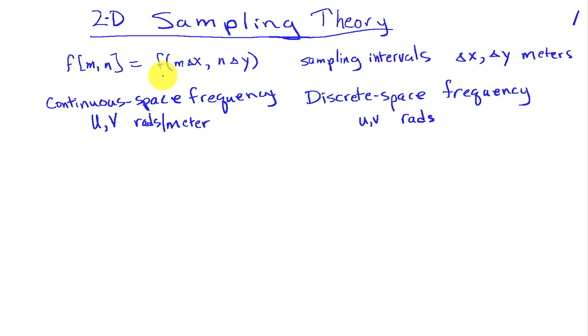We have a signal F, which is a function of continuous space, so it's a function of x and y. The parentheses here denote that this is a continuous valued function. If we evaluate this signal at intervals m times delta x and n times delta y, we can call that our sampled signal F of m, n. Our sampling intervals are delta x and delta y, and we're assuming those are measured in units of meters.